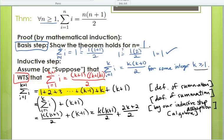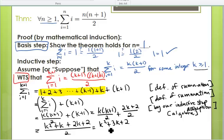And so then that is going to be, and I'm going to multiply this part out on the left here. So we have k squared plus k plus two k plus two all over two, which equals k squared plus three k plus two over two.